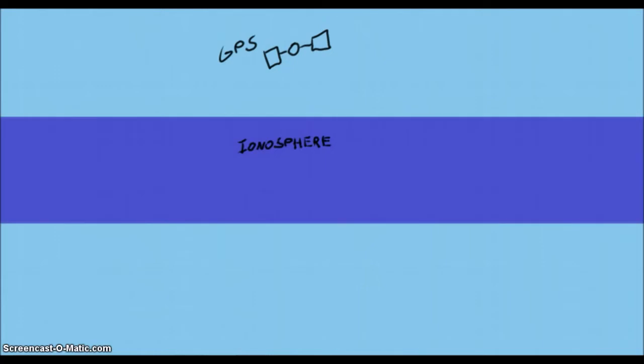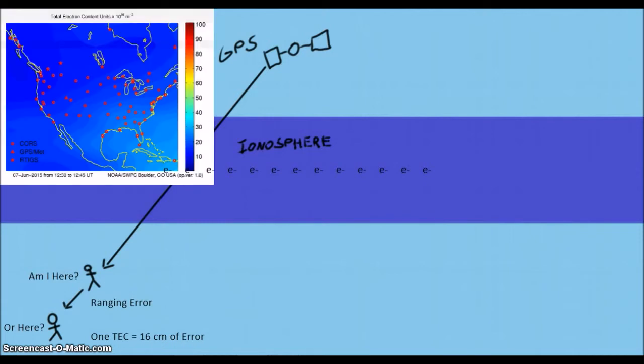These electrons cause problems in two big ways. One, the GPS signal can experience a change in group velocity, and create an unexpected delay known as a ranging error. 1 TEC is equivalent to roughly 16 centimeters of ranging error. You can see that values around 20 to 30 TEC are common in the United States.